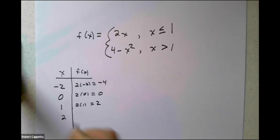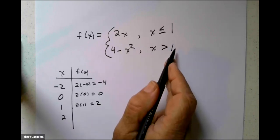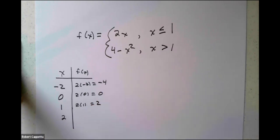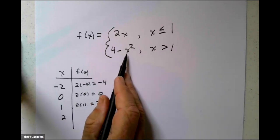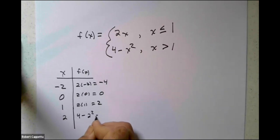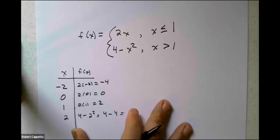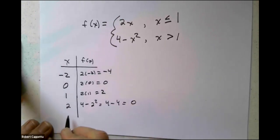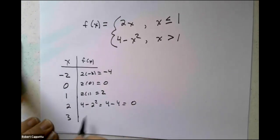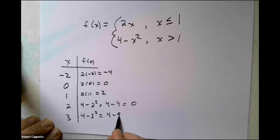But when I go to x equals 2, now it moves to the second branch. The function tells me it's 4 minus x squared: 4 minus 2 squared is 4 minus 4, which is 0. And one more point — if I choose x equals 3, I'm on this branch: 4 minus 3 squared is 4 minus 9, which is negative 5.